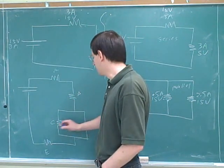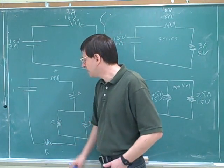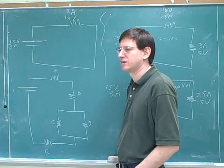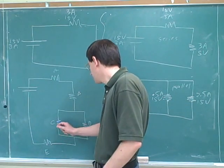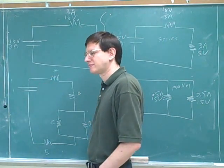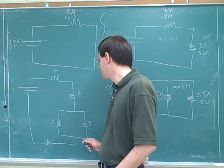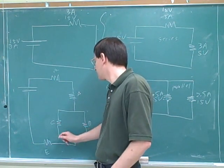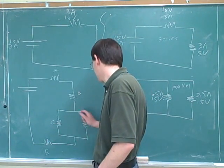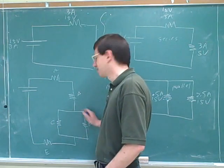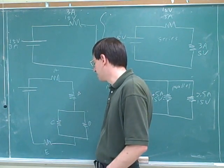Clearly C and D are not in series. If you go through C, you can just go this way and never go through D. How about C and E — are C and E in series? No. Because if you go through C, you don't have to go this way; you can go this way instead. The point is just that there's a path through C that doesn't go through E. Here's a loop that doesn't go through E, so C and E are not in series.